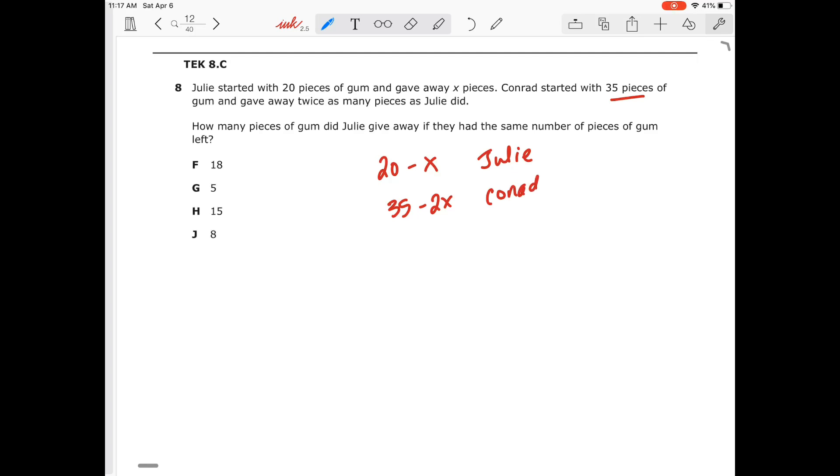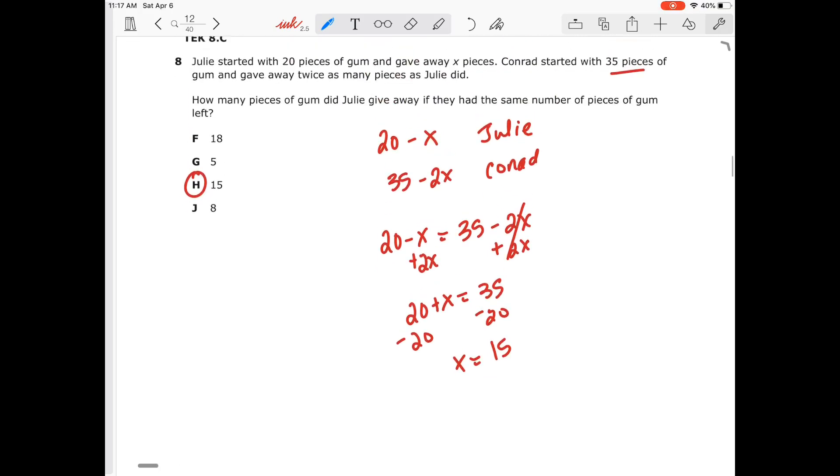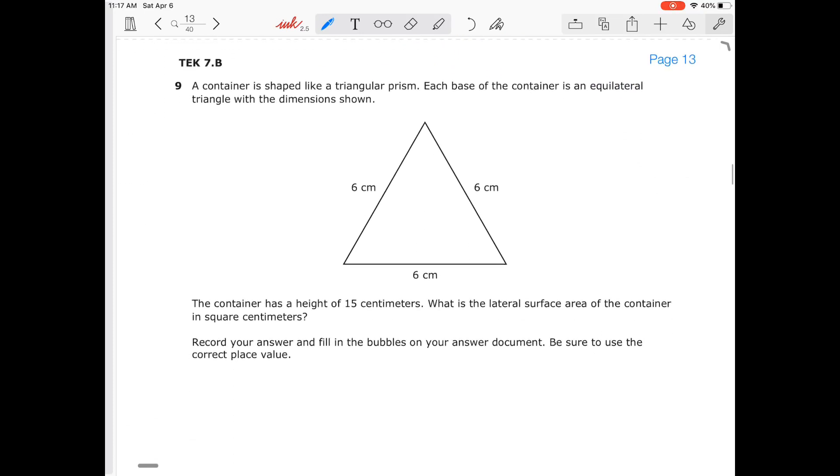And we want to know how many pieces of gum did Julie give away if they had the same number of pieces of gum. So really we're looking for x. So we're going to set these as equations equal to each other. And then I'm going to solve for x. So I'm going to combine that. That becomes 2x. So that's 20 plus x is equal to 35. Subtract 20. Subtract 20. That's going to give me x is equal to 15, which is my answer choice H. So really quite straightforward and simple and easy.